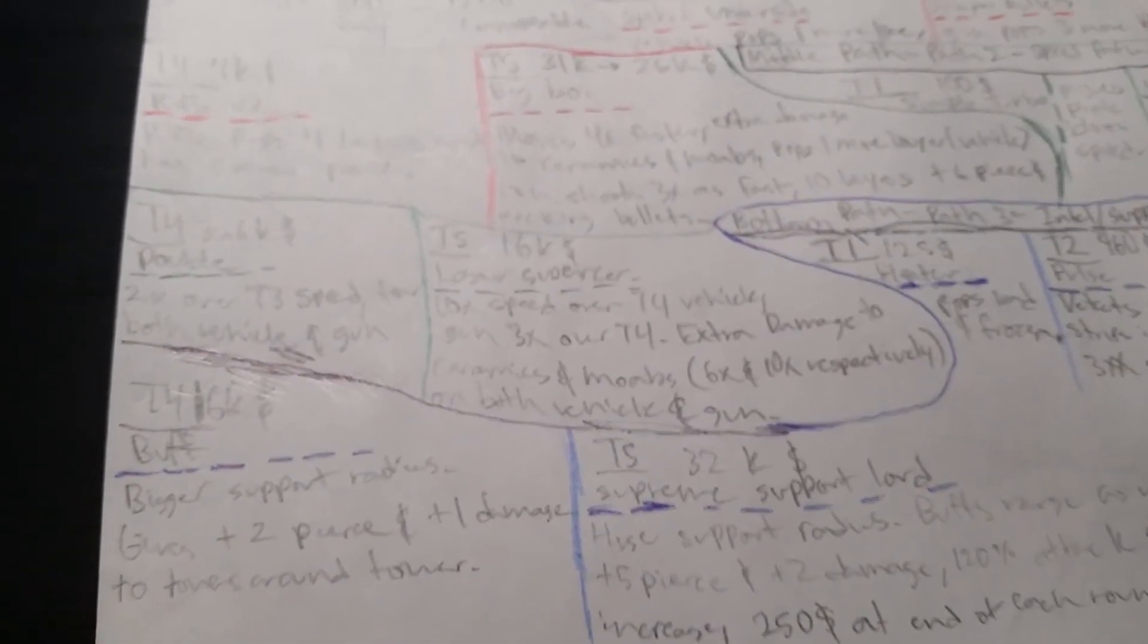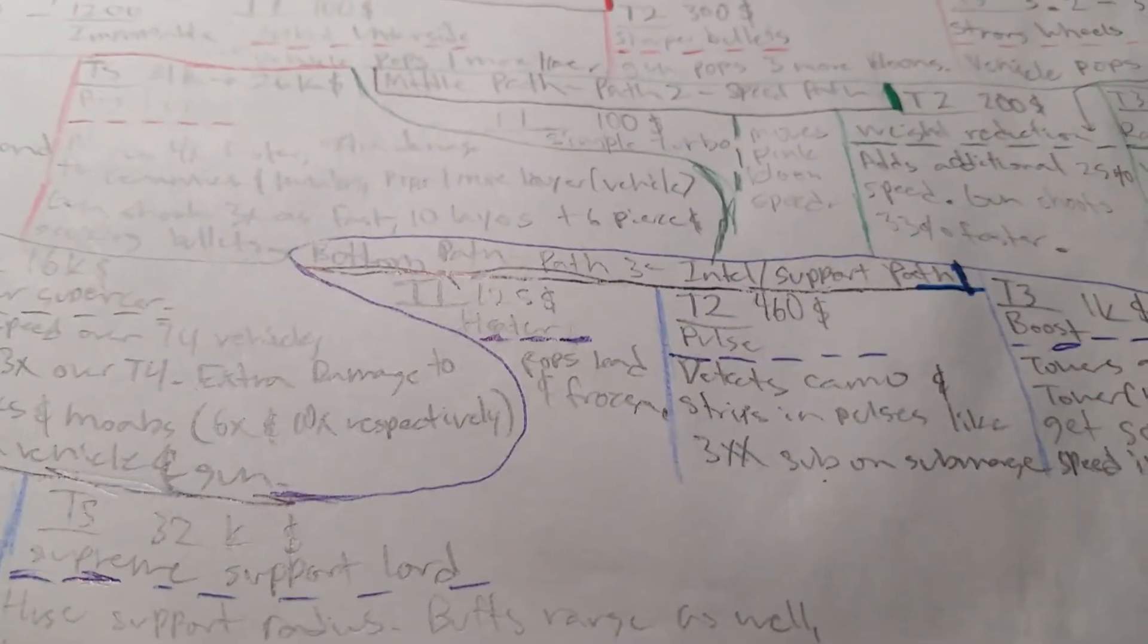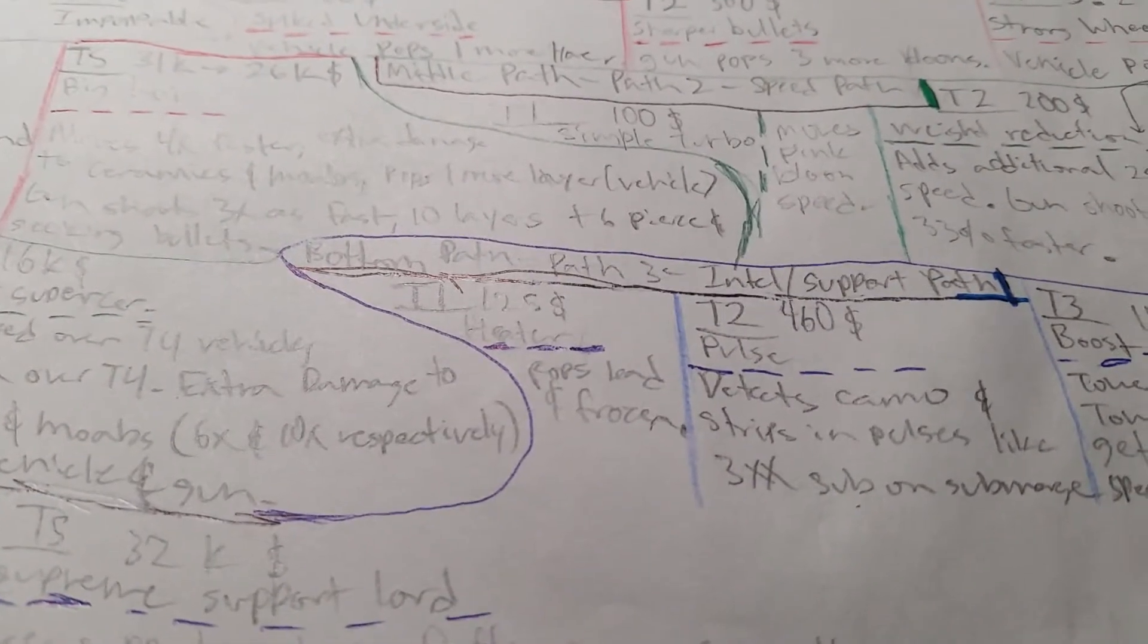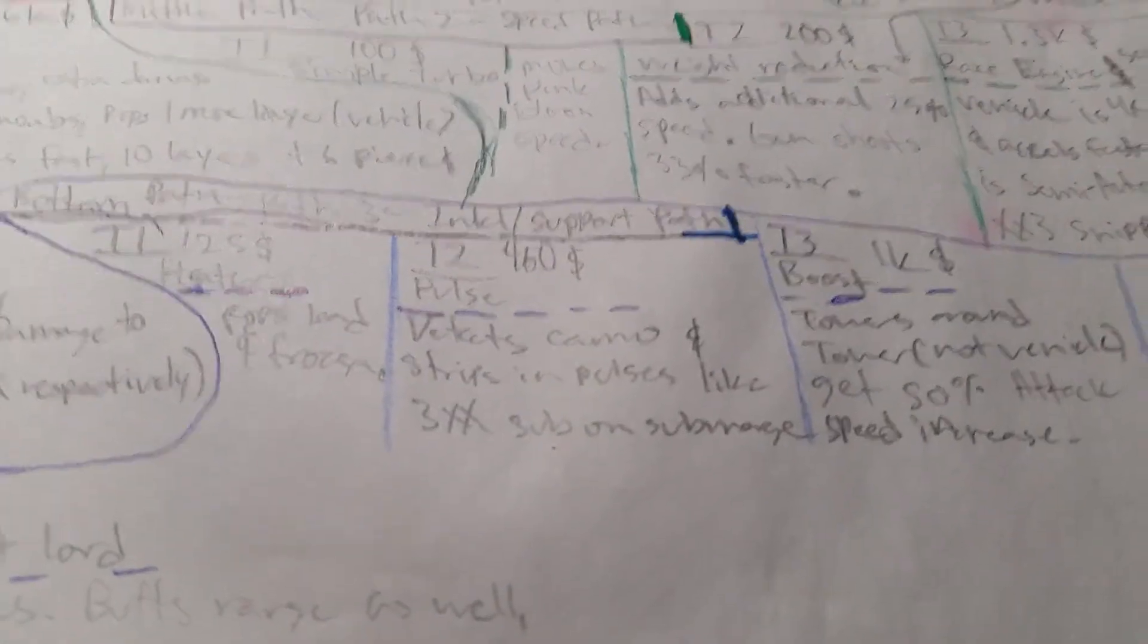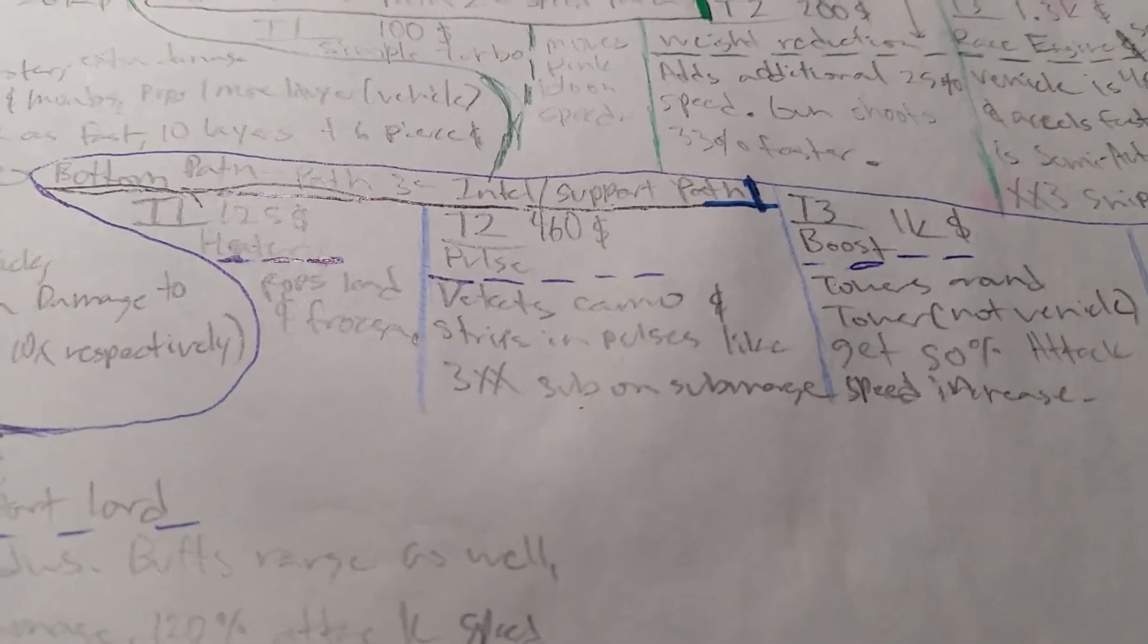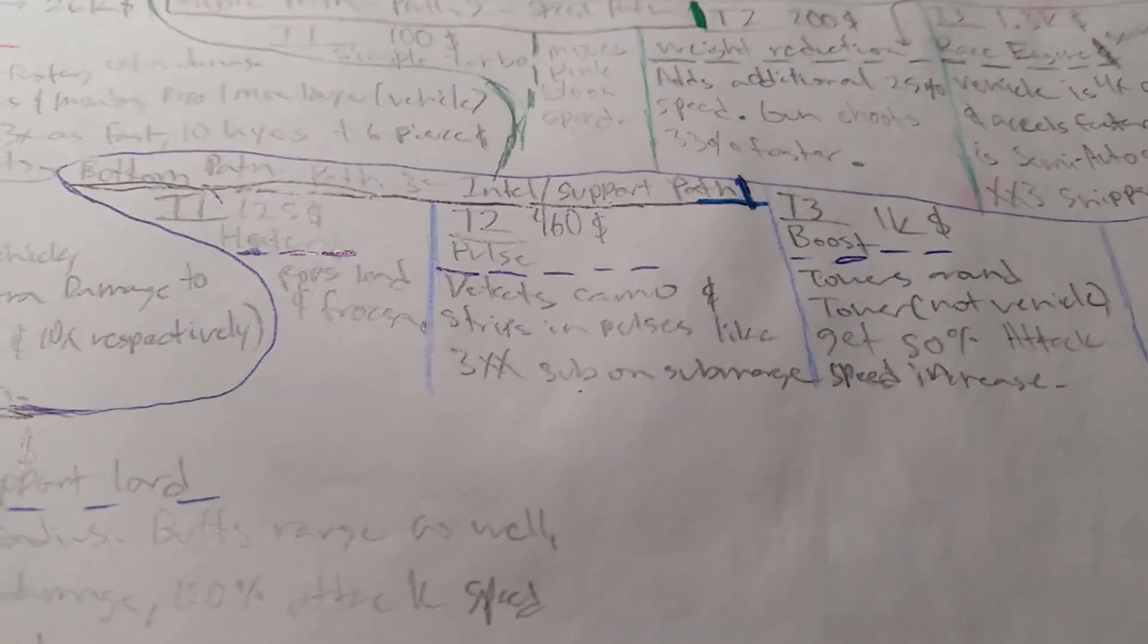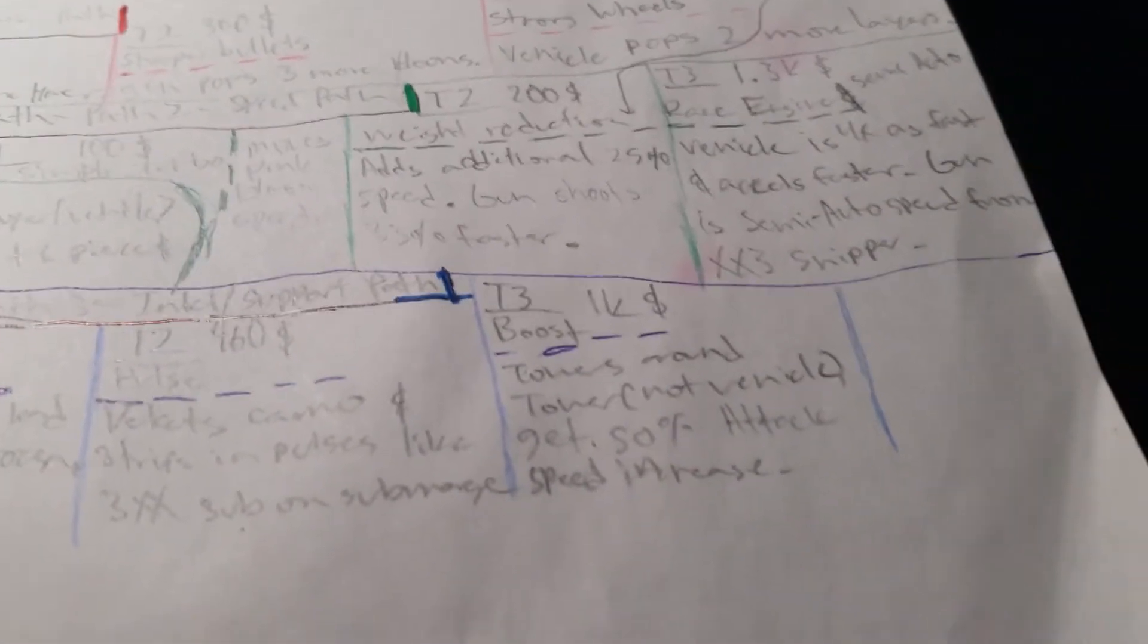Final bottom path or intel slash support path. Tier 1, 125 dollars, heater pops lead and frozen. Tier 2, 160 dollars, pulse detects camo and strips the camo off on pulses, similar to the submerge support on submerge targeting.